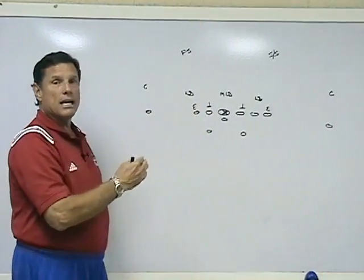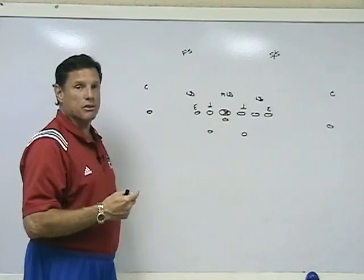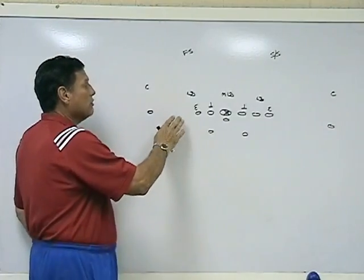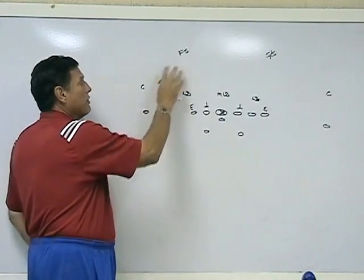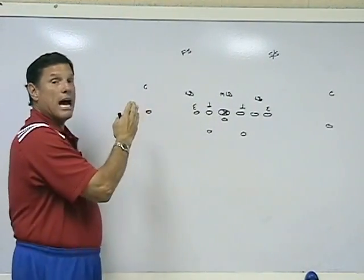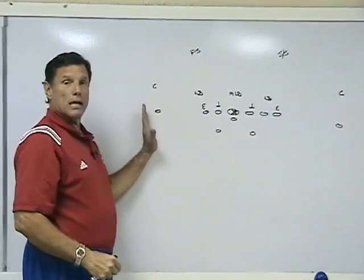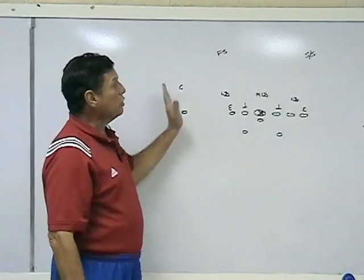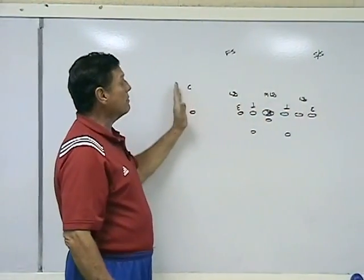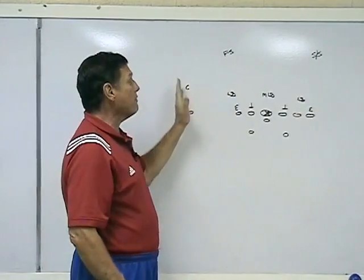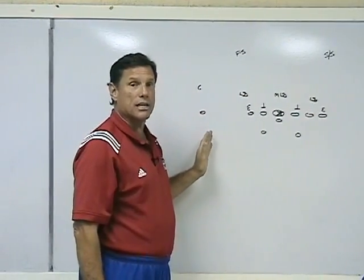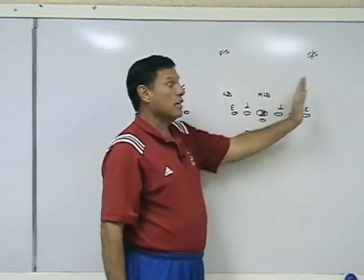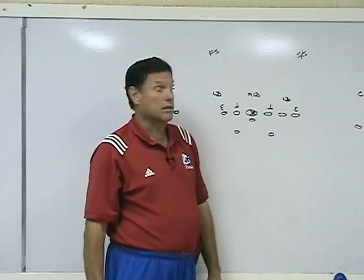Attacking the weak side in the 4-3 is also an interesting concept. We feel we're capable of finding a way to make the secondary respect the weak side because of the triple option weak, and create some problems for them to the strong side. The 2-deep shell gives them an advantage weak side because they have defenders for all three phases of the option, but we think it puts them in difficulty to the strong side because they don't have enough defenders to defend the triple option.